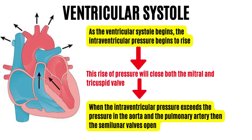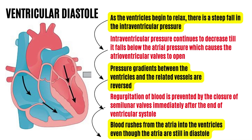When both ventricles finish contracting, they relax — this is ventricular diastole, which lasts about 0.5 seconds. As the ventricles begin to relax, there is a steep fall in intraventricular pressure, and the pressure gradients between the ventricles and related vessels are reversed. The pressure in the ventricles is now lower than in the aorta and pulmonary artery, so blood tends to regurgitate back — but this is prevented by closure of the semilunar valves immediately after ventricular systole ends. The interval between closure of the semilunar valves and opening of the atrioventricular valves is known as the isovolumic or isometric relaxation phase.